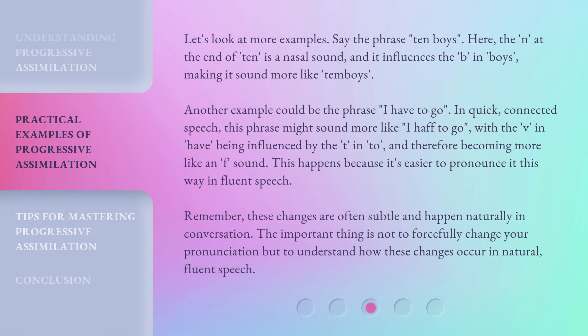Let's look at more examples. Say the phrase 'ten boys.' Here, the 'n' at the end of 'ten' is a nasal sound, and it influences the 'b' in 'boys,' making it sound more like 'ten boys.' Another example could be the phrase 'I have to go.' In quick, connected speech, this phrase might sound more like 'I have to go,' with the 'v' in 'have' being influenced by the 't' in 'to,' and therefore becoming more like an 'f' sound. This happens because it's easier to pronounce it this way in fluent speech.